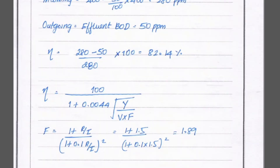The outgoing BOD is given as 50 ppm. So efficiency = (280 - 50) / 280 × 100 = 82.14%. Now we apply the NRC formula: efficiency = 100 / (1 + 0.0044 × √(y / (v × f))), where y is BOD in kg/day, v is volume, and f is the recirculation factor.